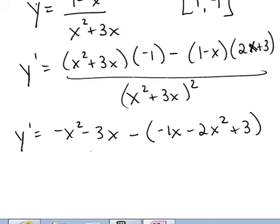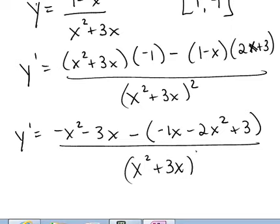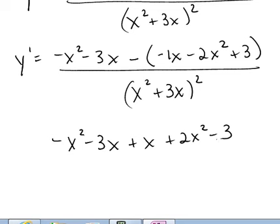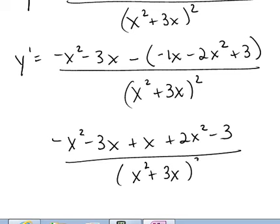You have to distribute that negative all the way through there and clean that up. So in the numerator, we have negative x squared minus 3x plus x plus 2x squared minus 3 over x squared plus 3x squared.